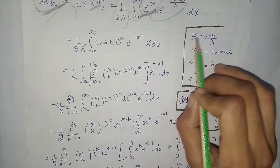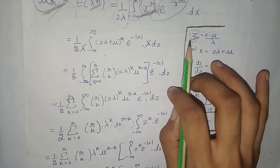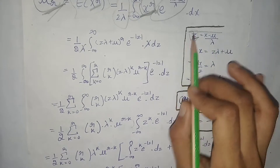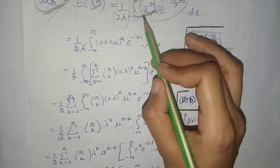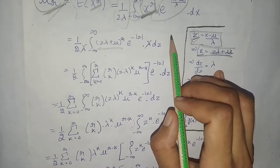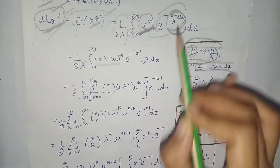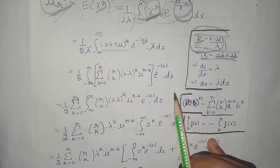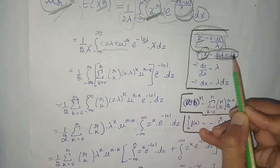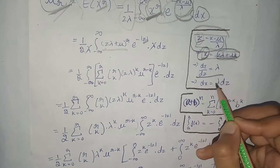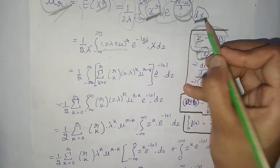Now we take another variable: let z = (x − μ)/λ, and we know that z belongs to the standard Laplace distribution. From this, we get the value of x in terms of z, so we substitute that value in. We also know that the exponent term equals z, so we write z there. We then change dx in terms of dz — differentiating both sides with respect to z gives us dx = λ dz, and we substitute accordingly.